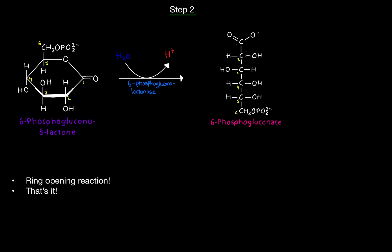Step two is a ring opening reaction. We're going to take the 6-phosphogluconolactone and add water to it with the enzyme 6-phosphogluconolactonase, and basically open up the ring. The best thing to do here is to count your carbons — that's the best way to tackle this step.